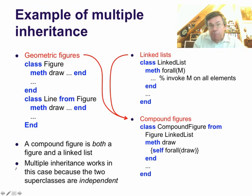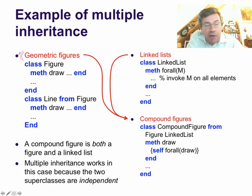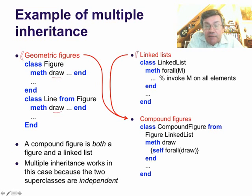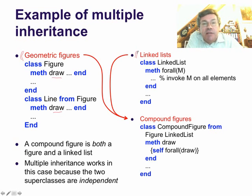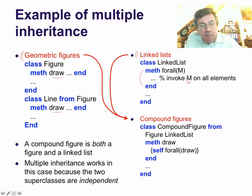Here's a simple example of multiple inheritance that works well. Here on the left, we have a set of classes that implement geometric figures — line, circles, and so on — and each one of them has a method draw. Here on the right, we have a class that implements linked lists, a list of elements. We can add things to this list, we can traverse the list. We have a method for-all that invokes method M on all elements of a linked list.